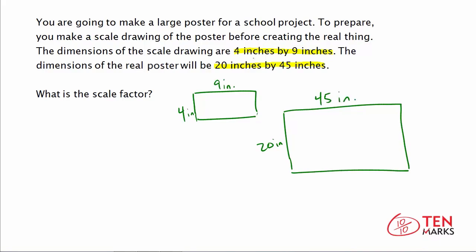Now when you're given dimensions like this, where they're listed in an order, 4 inches by 9 inches, and you have another set of dimensions, 20 inches by 45 inches, the corresponding side lengths are the ones that are listed in the same order. So in this case, the first measurement here, 4 inches, corresponds to the side length of the real poster of 20 inches because they're both listed first.